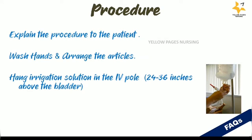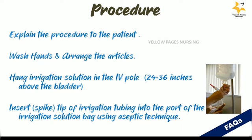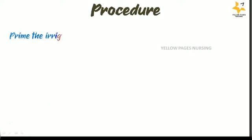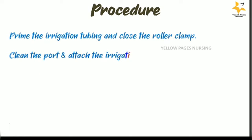The procedure for continuous bladder irrigation includes: explaining the procedure to the patient, washing hands and arranging articles, hanging the irrigation solution on the IV pole 24 to 36 inches above the bladder catheter, inserting the tip of the irrigation tubing into the port of the irrigation solution bag using aseptic technique, then priming the irrigation tubing and closing the roller clamp, cleaning the port, and attaching the irrigation tubing to the irrigation port of the catheter.